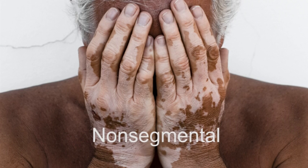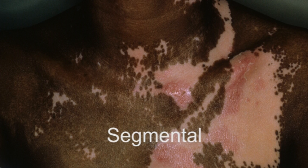Non-segmental vitiligo is the most common form of the disease, accounting for 85–90% of cases overall, and presents with symmetrically distributed lesions over the body. Segmental vitiligo is less common and is characterised by unilateral distribution of the lesions, an early onset and rapid spread.